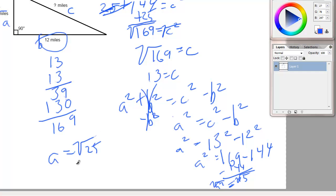Just think to yourself what times itself is 25, and you'll get 5. So, a equals 5, which, of course, we already know from before.